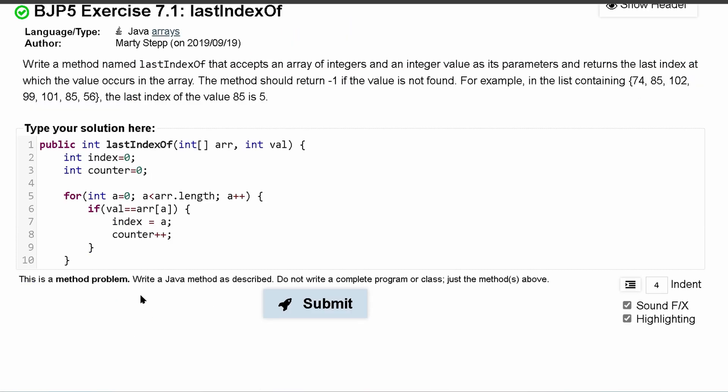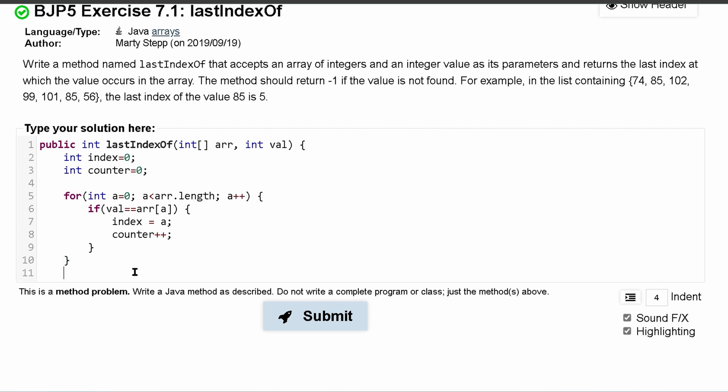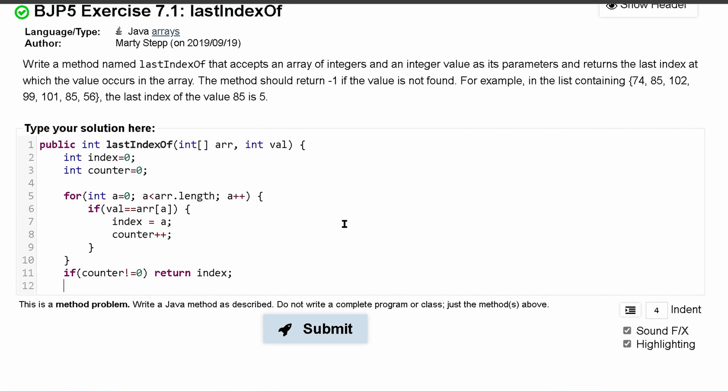And all I said was when I'm done with this, if the counter does not equal zero - because we started at zero - then we are just going to return our current index. Otherwise we will just return negative one, so we could do else return negative one.